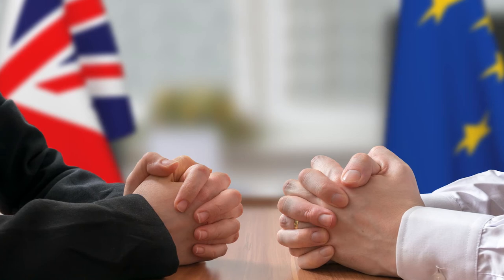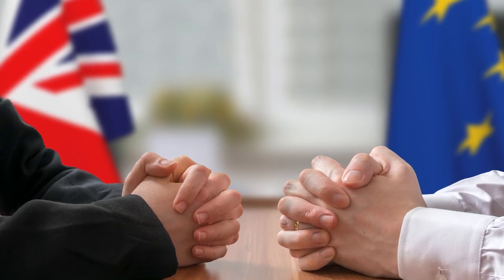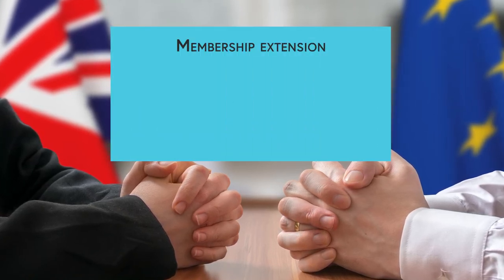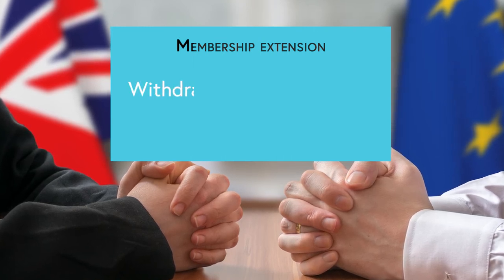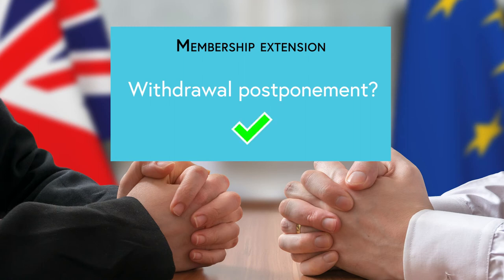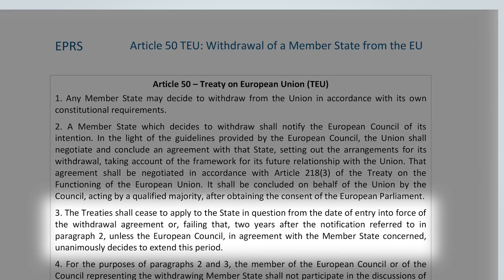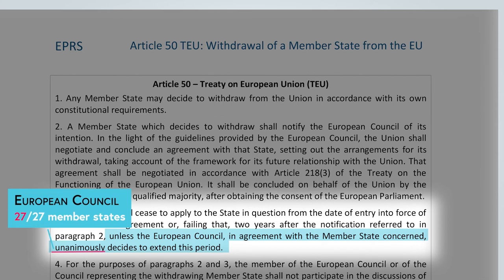Article 50 also says that if after two years of negotiation, the withdrawing state or the European Union want to request an extension of membership and therefore a postponement of withdrawal, they can do so. But an extension of withdrawal can only be approved by the European Council unanimously and in agreement with the withdrawing member state.